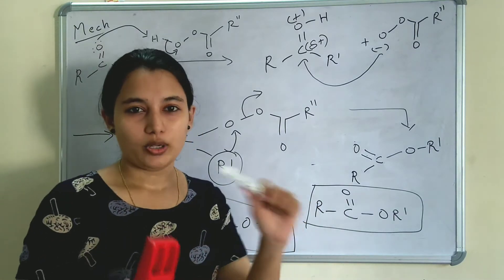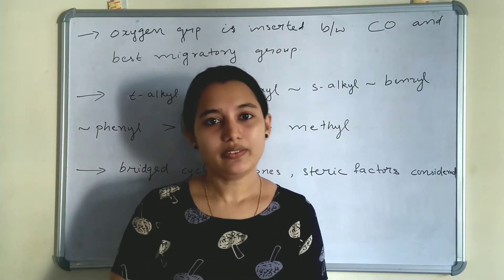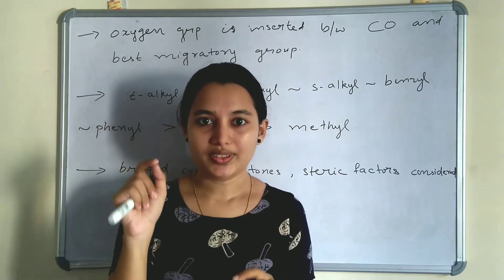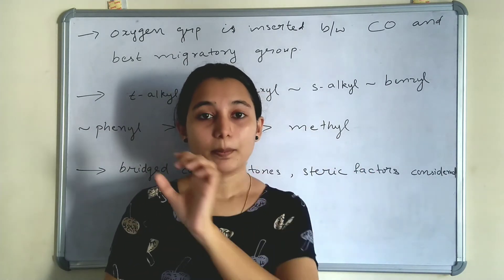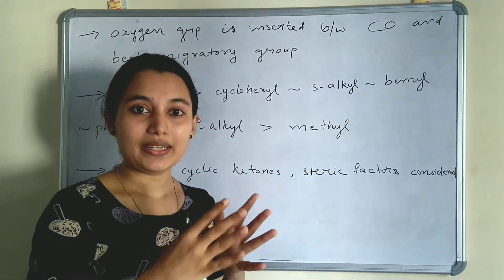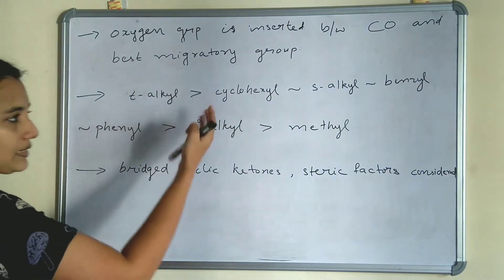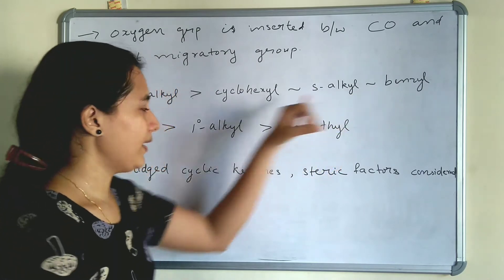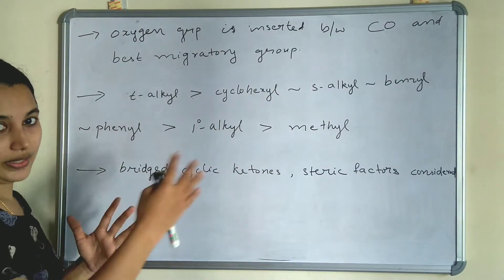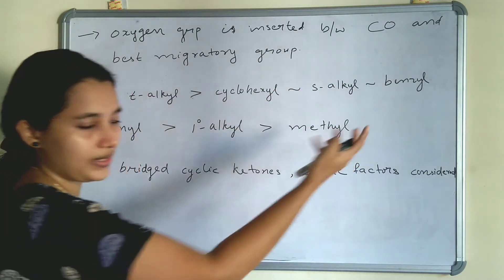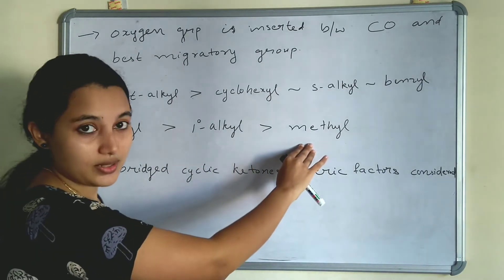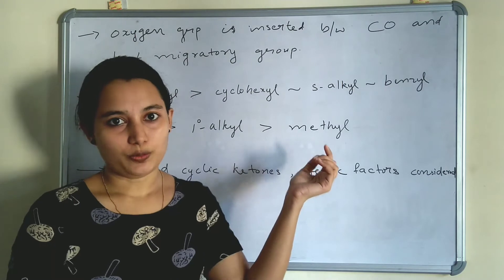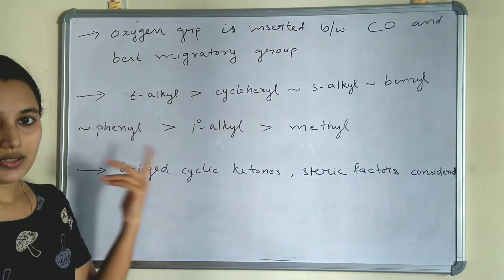Now let us see another important point — special cases of Baeyer-Villiger Oxidation. From a competitive exam point of view, the simple trick for writing the product is: insert oxygen in between the carbonyl group (C=O) and the best migratory group. The migratory order is: tertiary alkyl first, then cyclohexyl, secondary alkyl, benzyl, and phenyl — these have the same reactivity order — then primary alkyl, and lastly the methyl group. Tertiary alkyl has the most preference and the methyl group has the least.